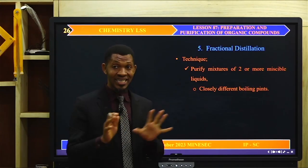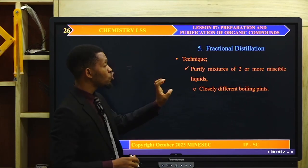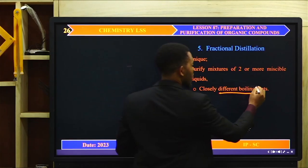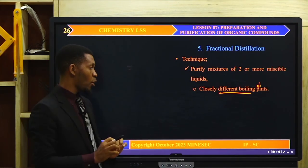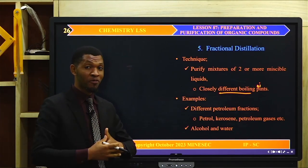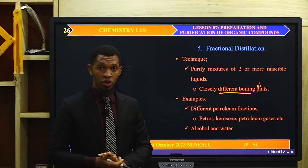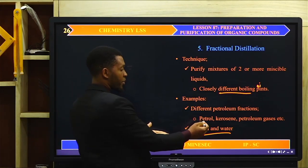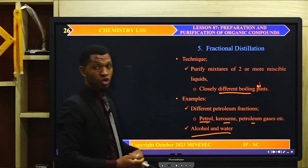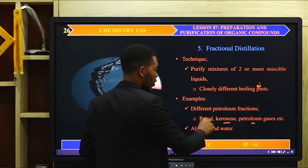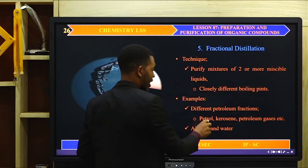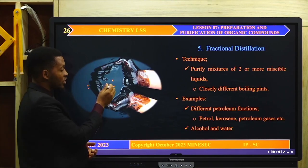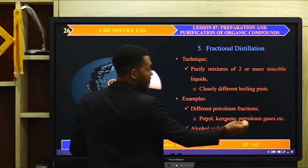We go now to fractional distillation, another purification and separation technique. We use fractional distillation to separate mixtures of two or more miscible liquids which have closely different boiling points. Examples include: petroleum fractions, which are separated by fractional distillation, and a mixture of alcohol and water, which can also be separated by fractional distillation. Some petroleum fractions include petrol, kerosene, and petroleum diesel.